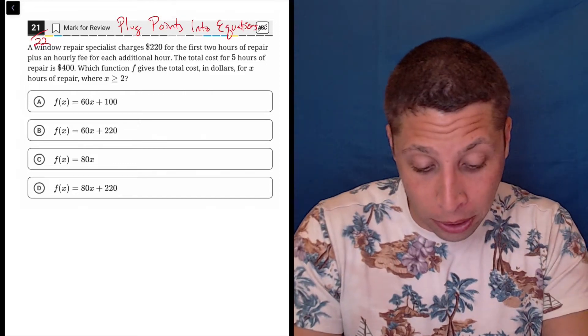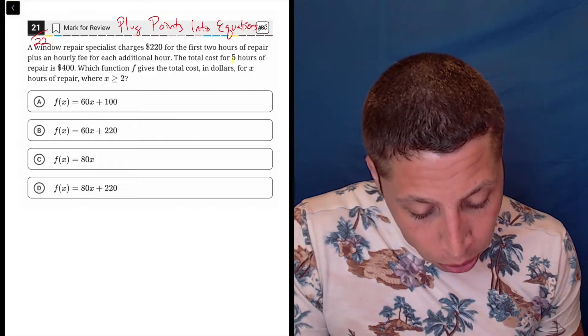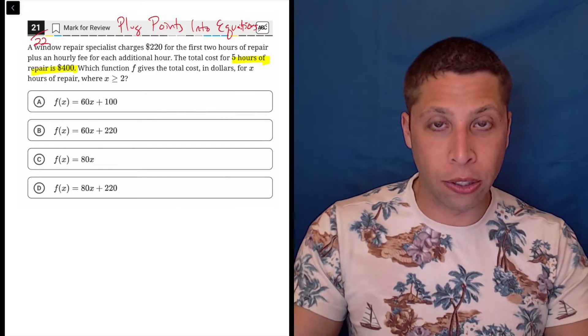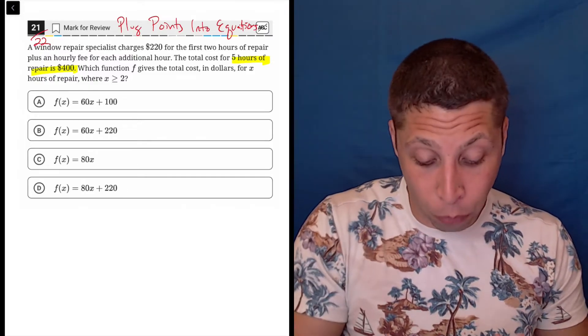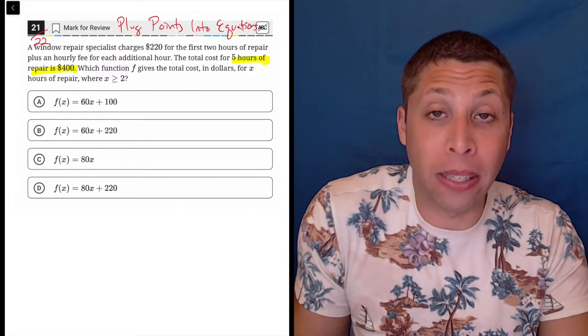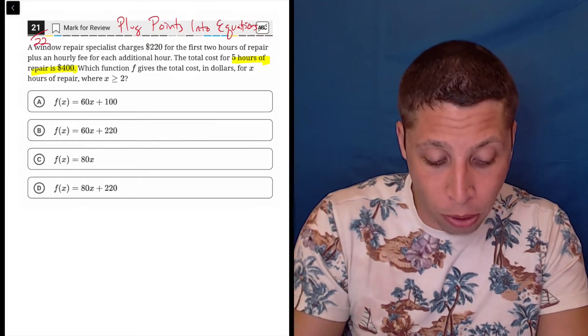The most obvious point to me is this one: the total cost for five hours of repair is $400. So X is the number of hours and we're supposed to get out 400. That's literally as simple as it gets in my mind of how they're going to give you a point. So why don't we just try that?